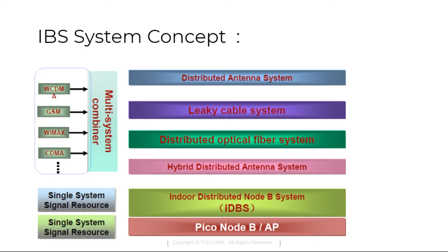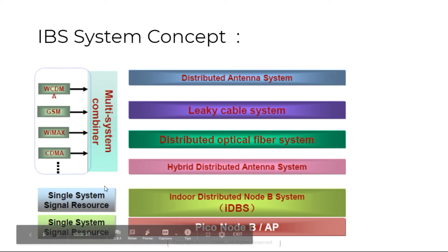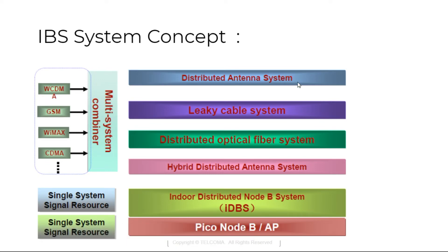The IBS system concept includes a multi-system combiner which combines multiple technologies. For the distributed antenna system we have: leaky cable system, distributed optical fiber system, hybrid DAS, and indoor Node B system — IDBS, Pico Node B, or access point.